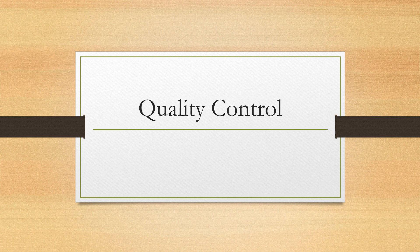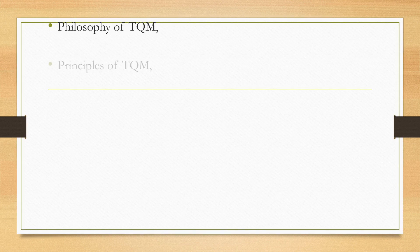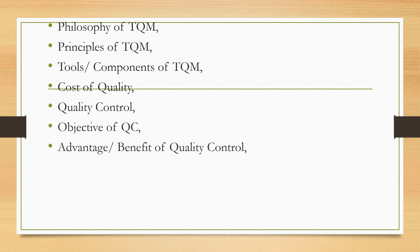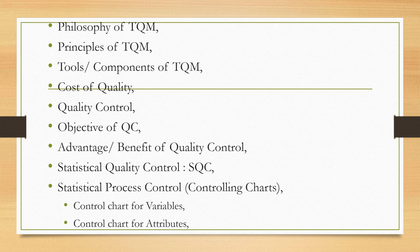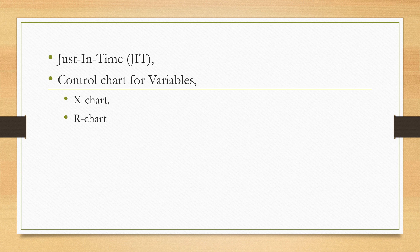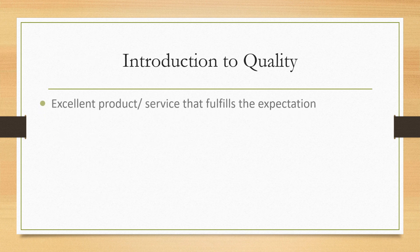Hello guys, welcome to the channel. Today I'm going to talk about quality control. This is the first part of the video, where we will cover: introduction to quality, historical evolution of Total Quality Management, concept of TQM, philosophy of TQM, principles of TQM, tools and components of TQM, cost of quality, quality control, objectives of quality control, advantages and benefits of quality control, Statistical Quality Control (SQC), Statistical Process Control (SPC), control charts for variables and attributes, and Just-In-Time (JIT).